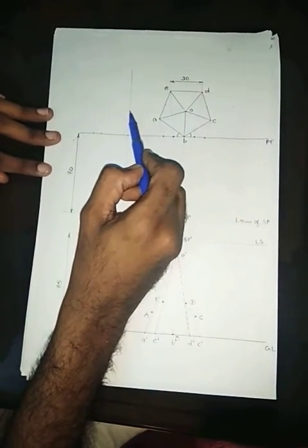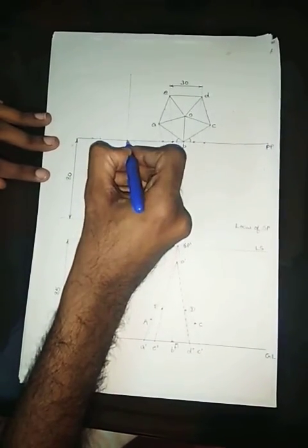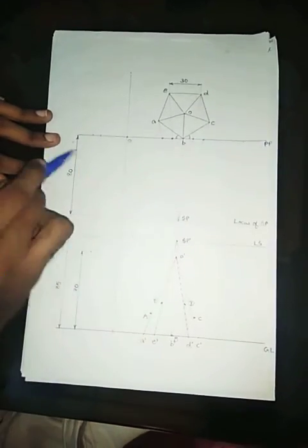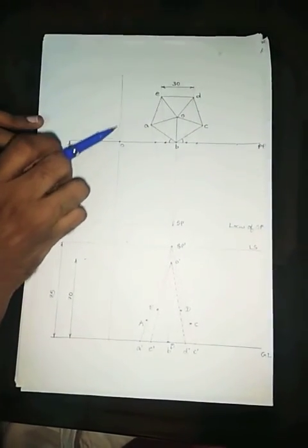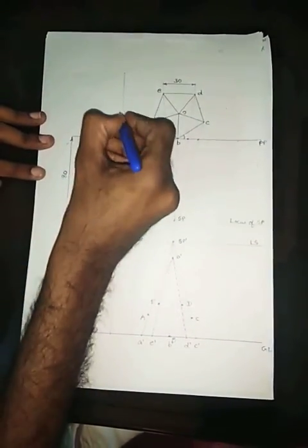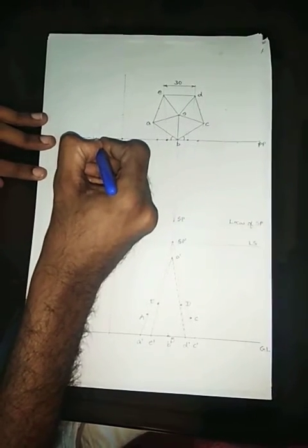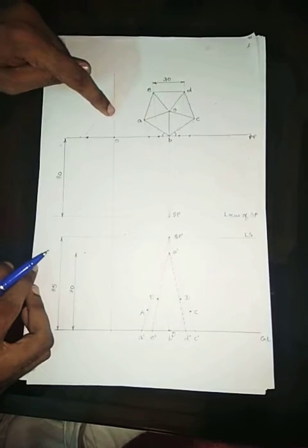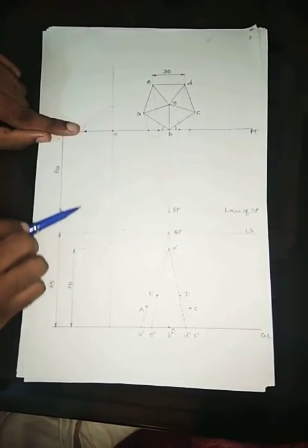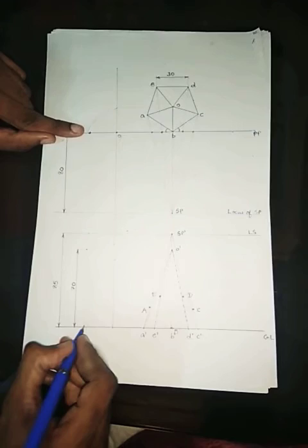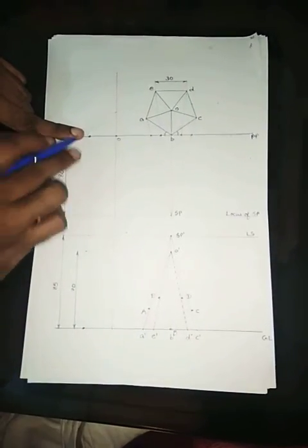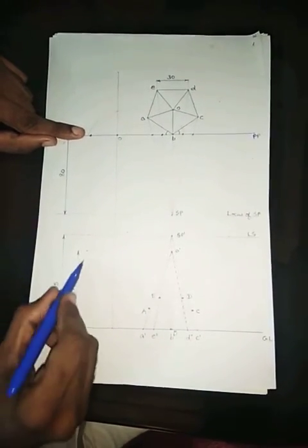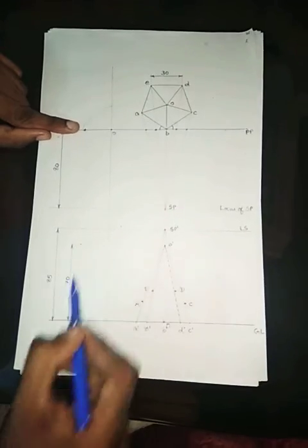Then you project O the apex horizontally till this vertical line. Now with this point as center, I am naming it again as O itself. With this point as center and this distance as radius, you rotate it. If you are rotating it you will be getting a point here. So I have transferred this point here, then I rotated it, I got it here. And then you transfer this point till ground line. I will be transferring this point till ground line. And then here you mark the height of the solid, that is 70mm.